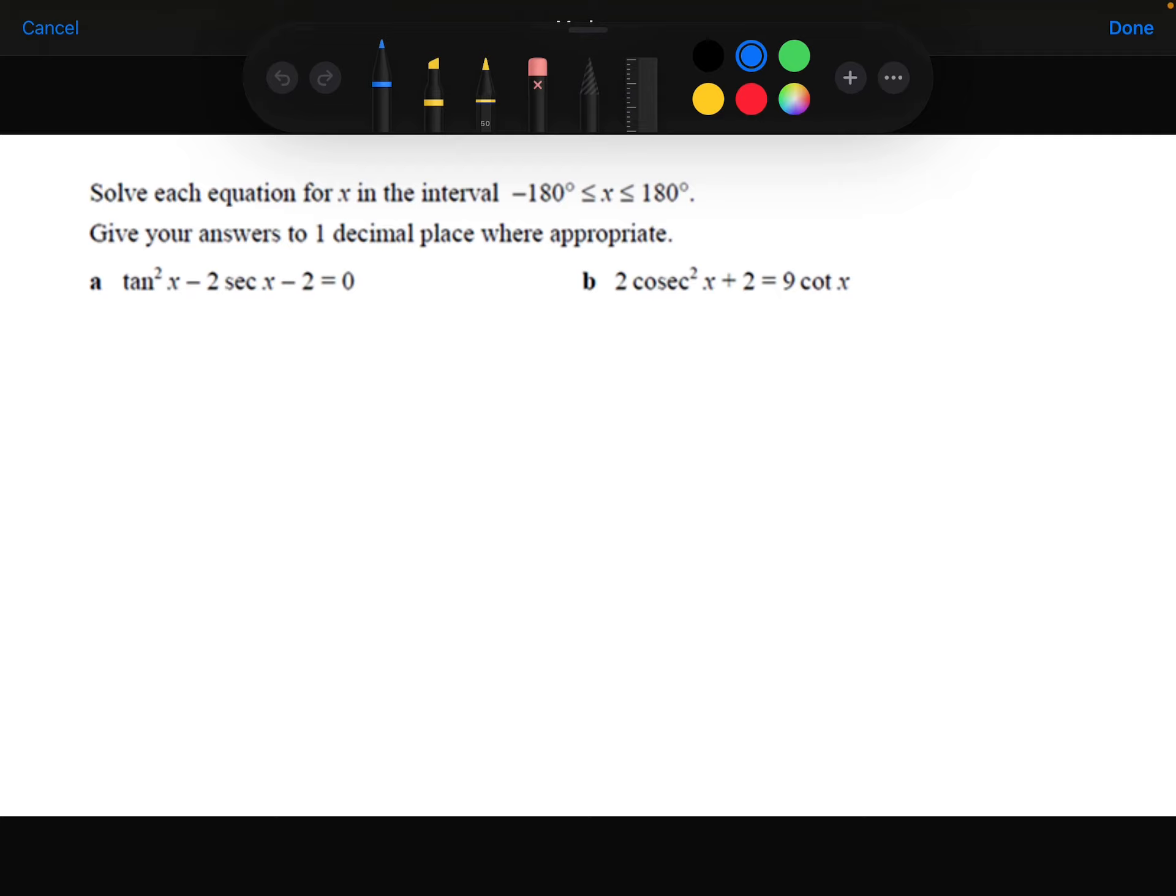So the first equation, we've got tan squared x minus 2 sec x minus 2 equals 0. The identity we need that links tan and sec together is that tan squared theta plus 1 is equal to sec squared theta, or x in this case.